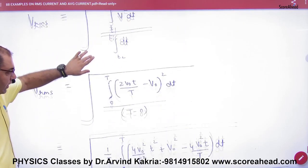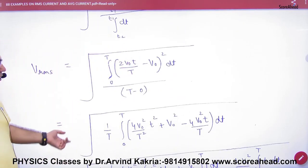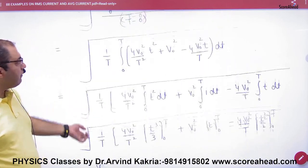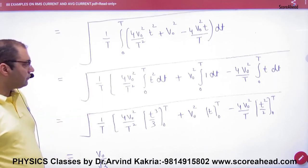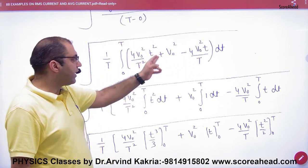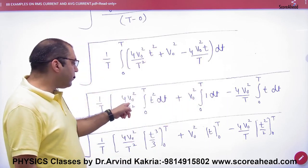We will substitute here, whole square, then we will open it a square b square minus 2ab divided by time. Let's go down. We will break the integration. Integration of first term, second term, third term. Constants will come out in time.